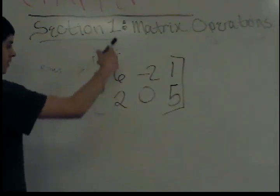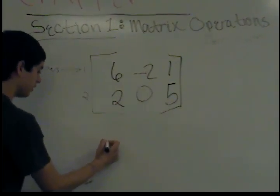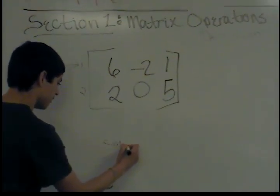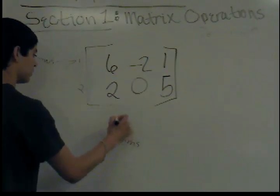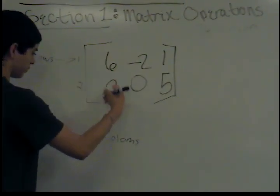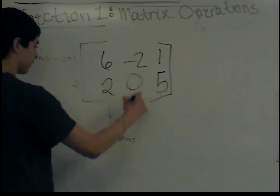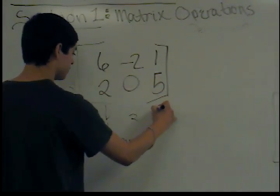And the ones that go down are called columns. For example, it would be column 1, column 2, and column 3.